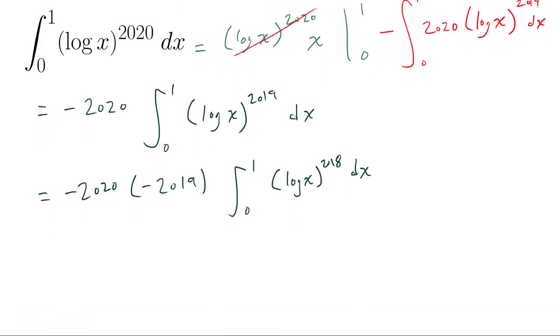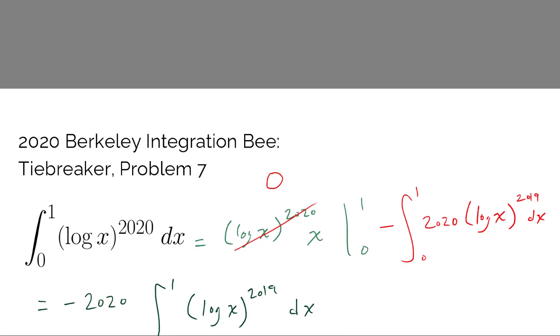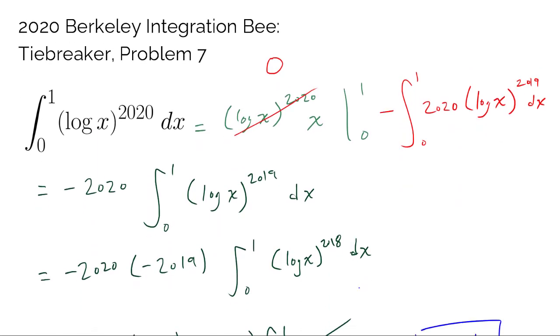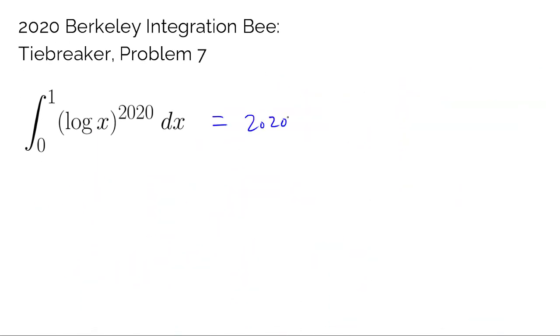So eventually, we're going to take out all the powers. We're going to take out negative 2020, negative 2019, all the way to negative 1, and we're simply going to be left with integral from 0 to 1 of log of x to 0 power, which is just 1 dx, and we know this thing is 1, and now we multiply these up. We have 2020 negative numbers, so we know it's going to be positive, and we're multiplying everything from 2020 to 1. So this is 2020 factorial. So there you go. We know the value of this integral is simply 2020 factorial.